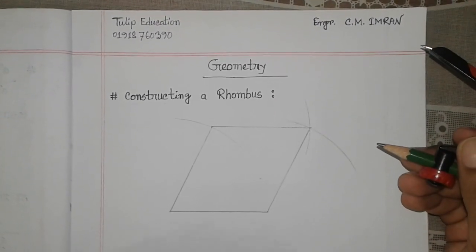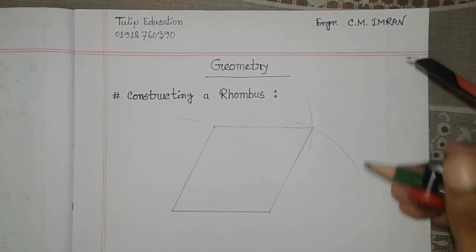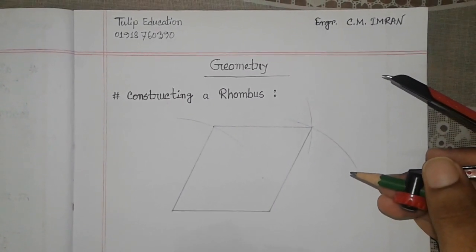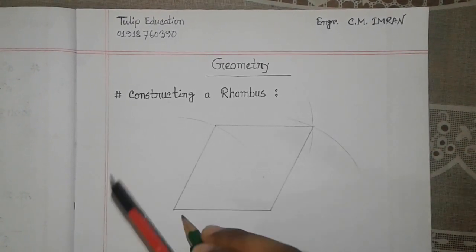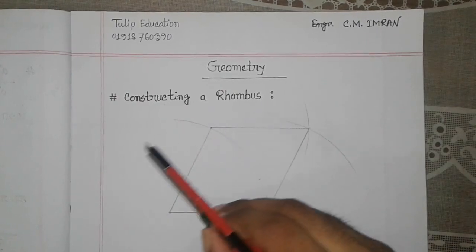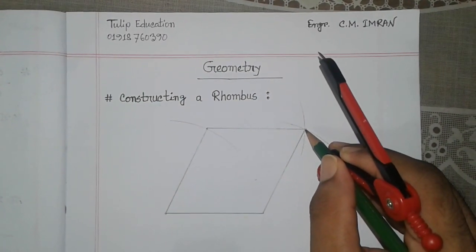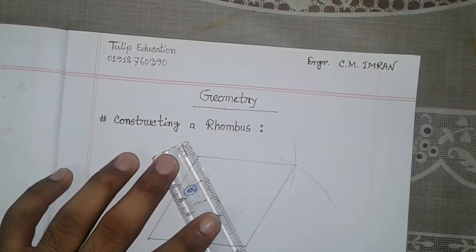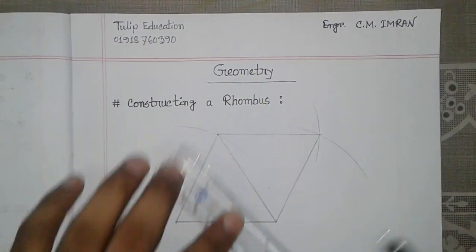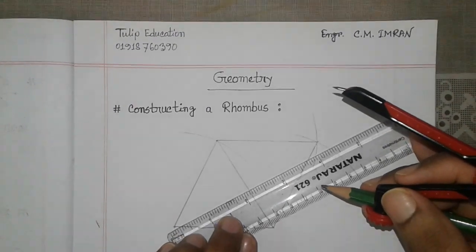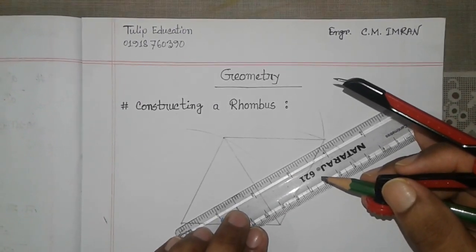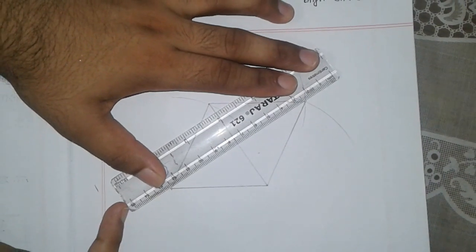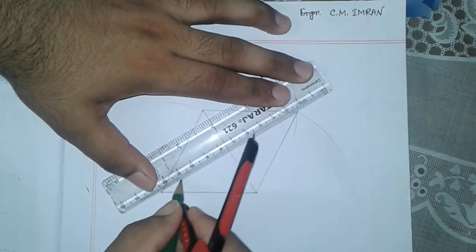I have already told you that it is very simple and very easy. Now I will show you the properties of the Rhombus. First of all, maybe you all know what diagonals are. If I draw a line from this point to this point inside the Rhombus it is called a diagonal. We can draw two diagonals here — one is shorter and another one is longer.